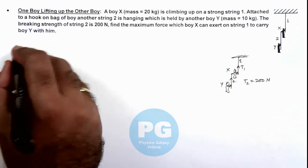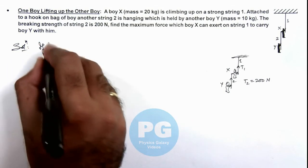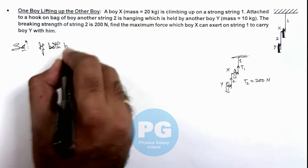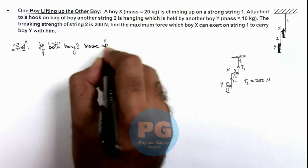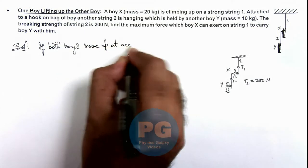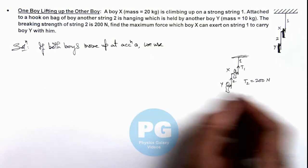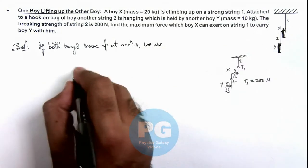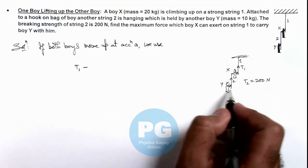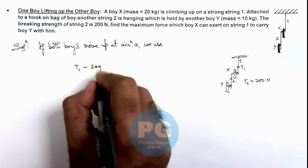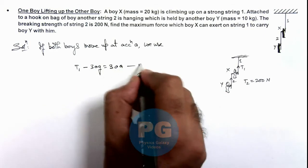So in this situation here we can write, if both boys move up at acceleration ay, here we can write for the system of boys: T1 minus the weight of boys, that is 20 plus 10, it is 30g, is equal to 30ay. And say this is our equation 1.